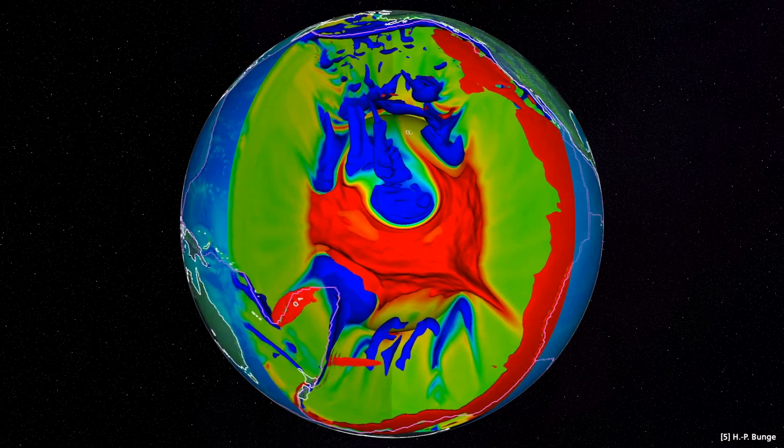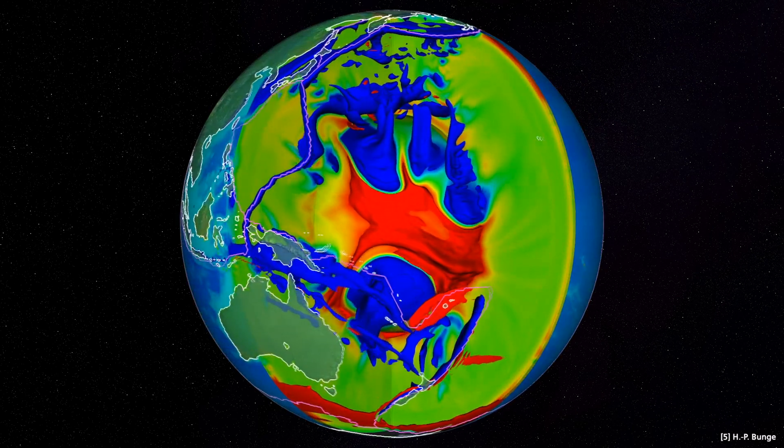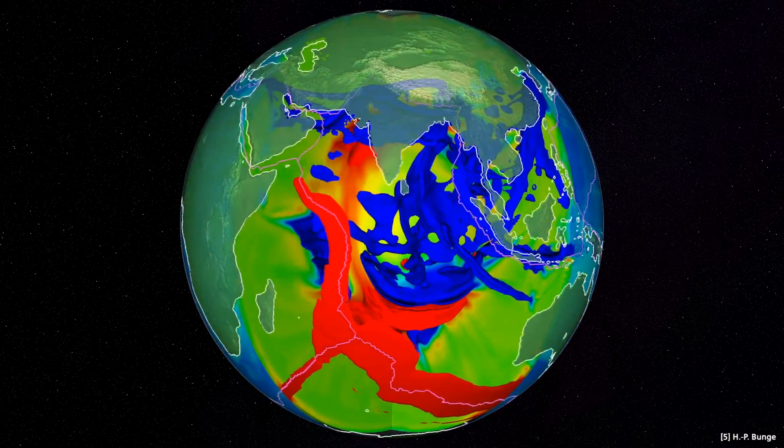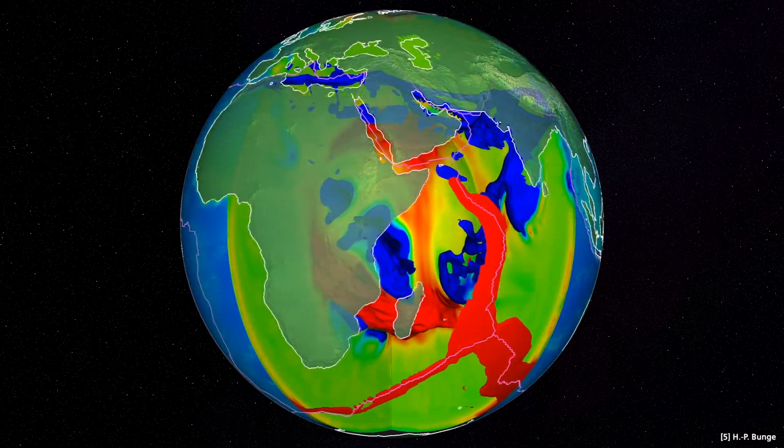Reddish colors stand for warm, rising material, while bluish-green colors represent cold, sinking material. The movements here take place at velocities up to 10 cm per year. This corresponds approximately to the scale of the tectonic plate movements on the earth's surface, which are driven by these very convection cells.